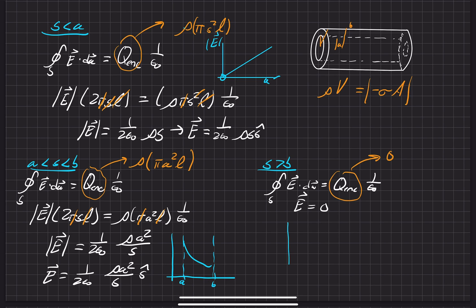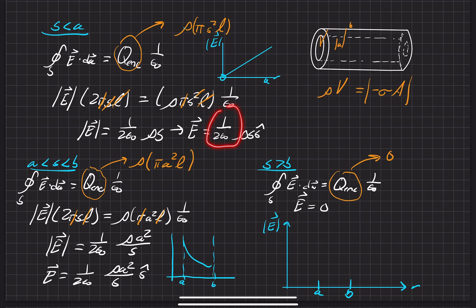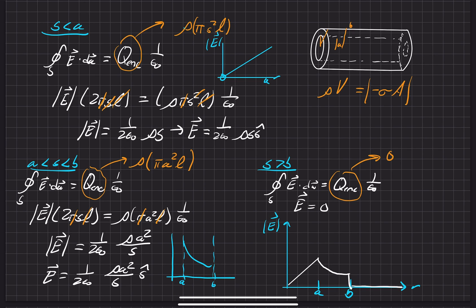Finally, we stitch all the plots together. On the full |E| vs r graph, marking a and b: from 0 to a, the field rises linearly as a constant times s. From a to b, it drops off as 1/s. Once it hits b, it drops immediately to zero and stays zero. That is the complete plot of the electric field for this coaxial cable.